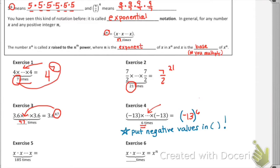In exercise five, we have x repeatedly multiplied 185 times. So x is the base, and the power would be how many times we're multiplying, which is 185, giving us x to the 185th. Then in exercise six, we're writing this algebraically: x is the base and n is the exponent, indicating how many times we want to multiply x as a factor.